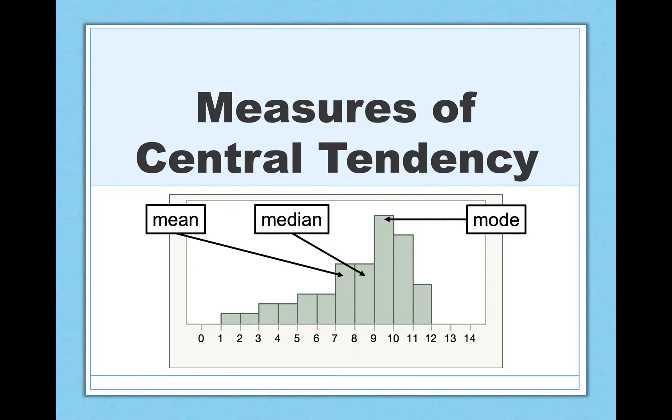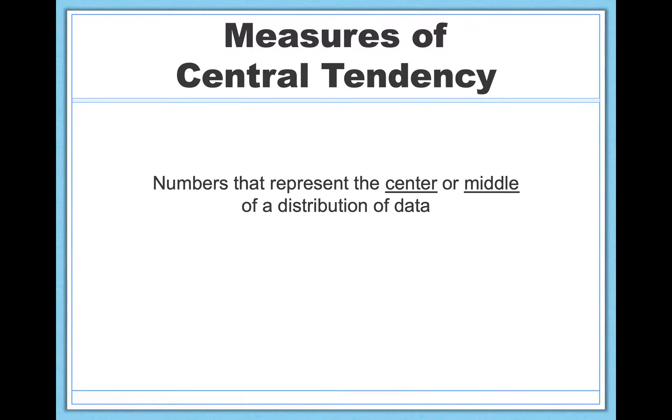Now, it may seem a little unnecessary to do that for something as simple as the mean, but as we learn more complex analyses, it's going to become more and more important to rely on notation to keep track of what we're referring to. So it ends up being really helpful, so bear with me for now on that. But for now, let's talk about measures of central tendency. These are simply numbers that represent the center or the middle of a distribution of data.